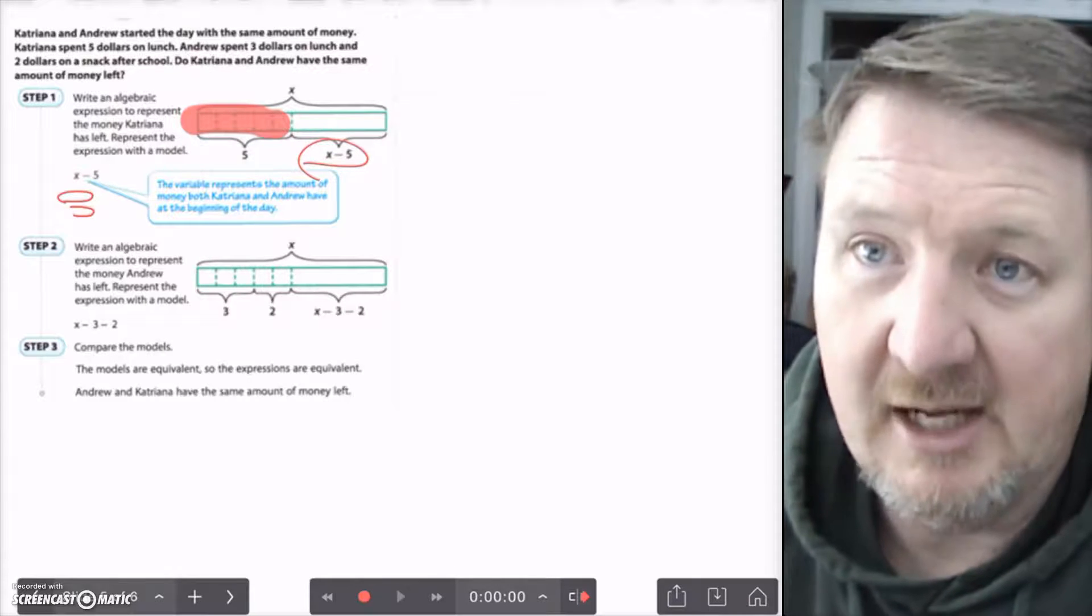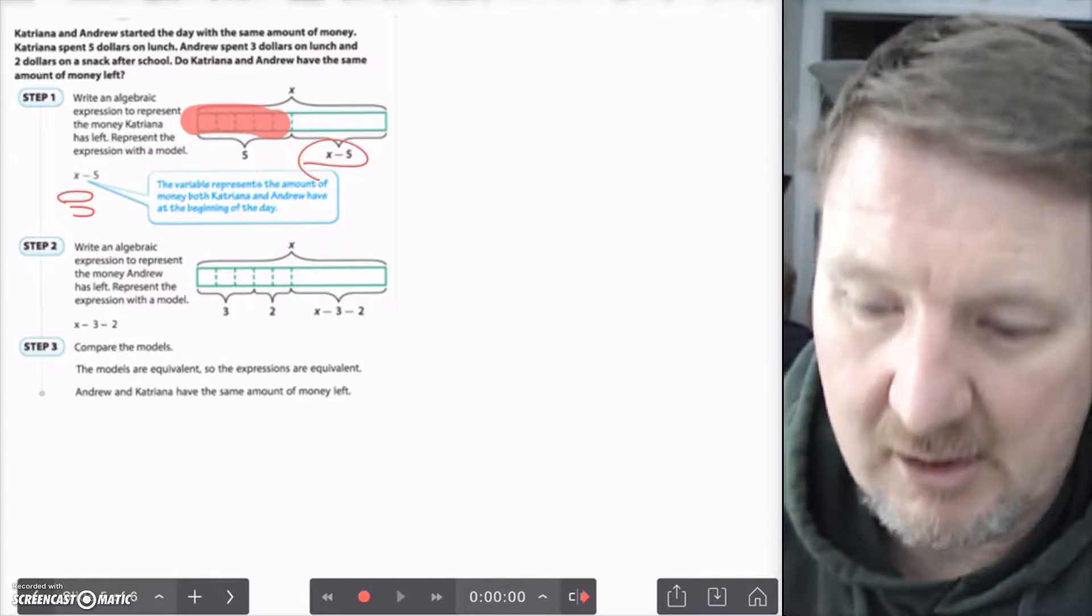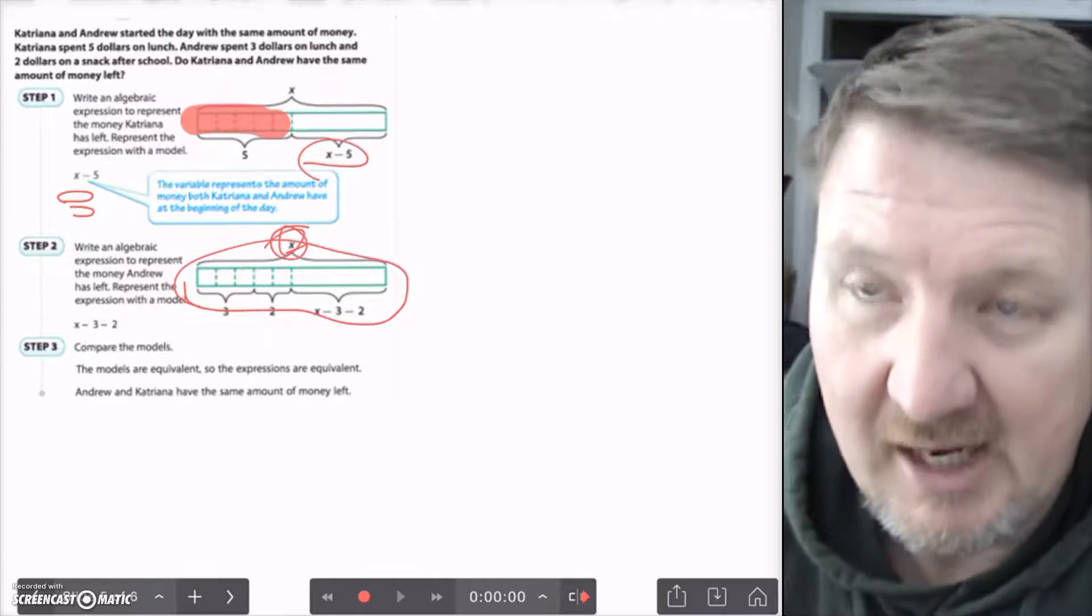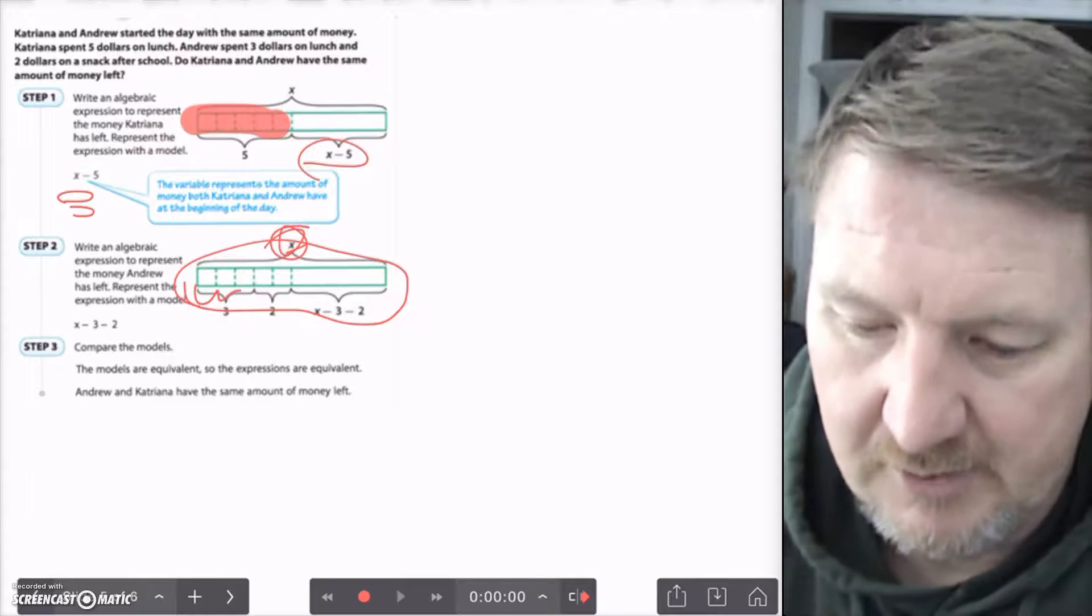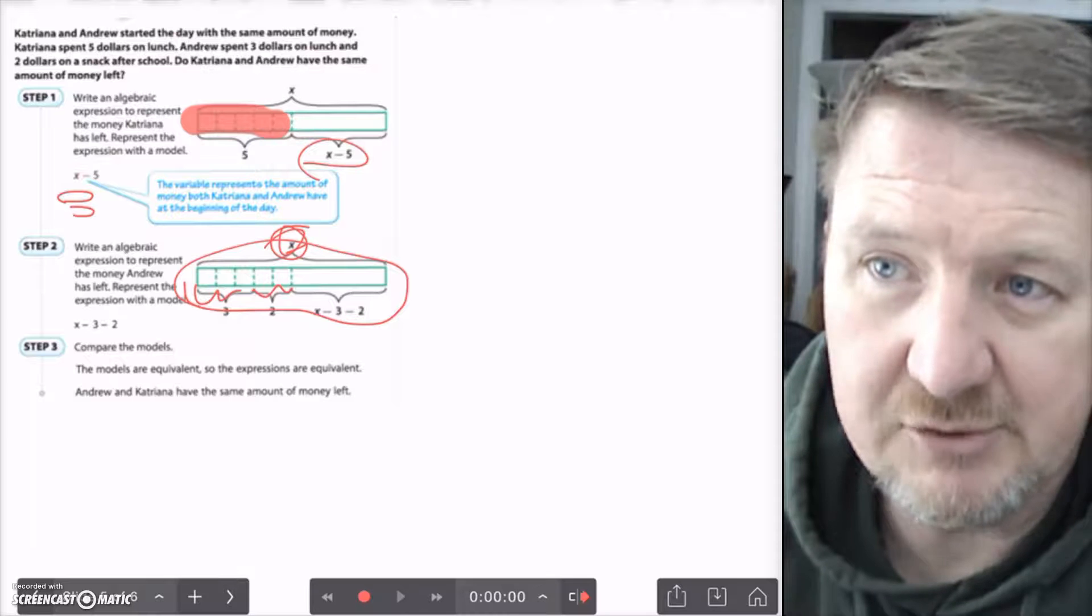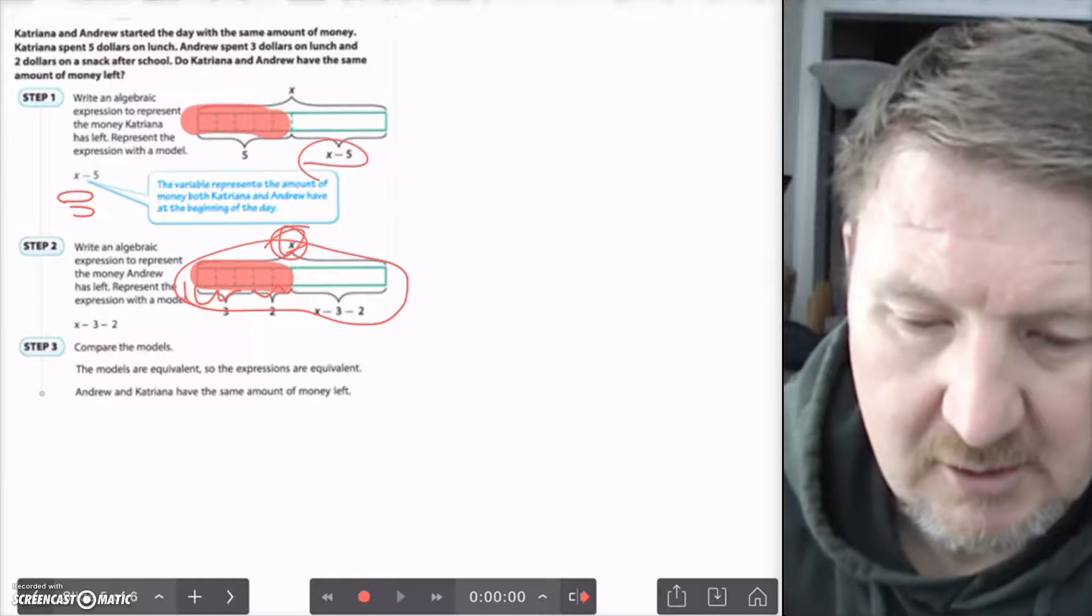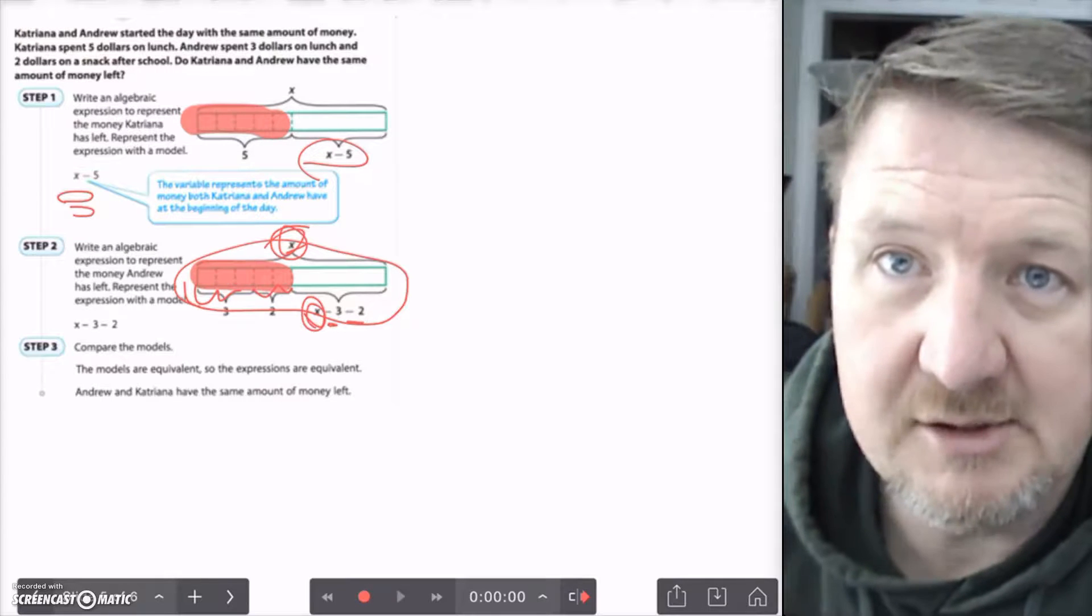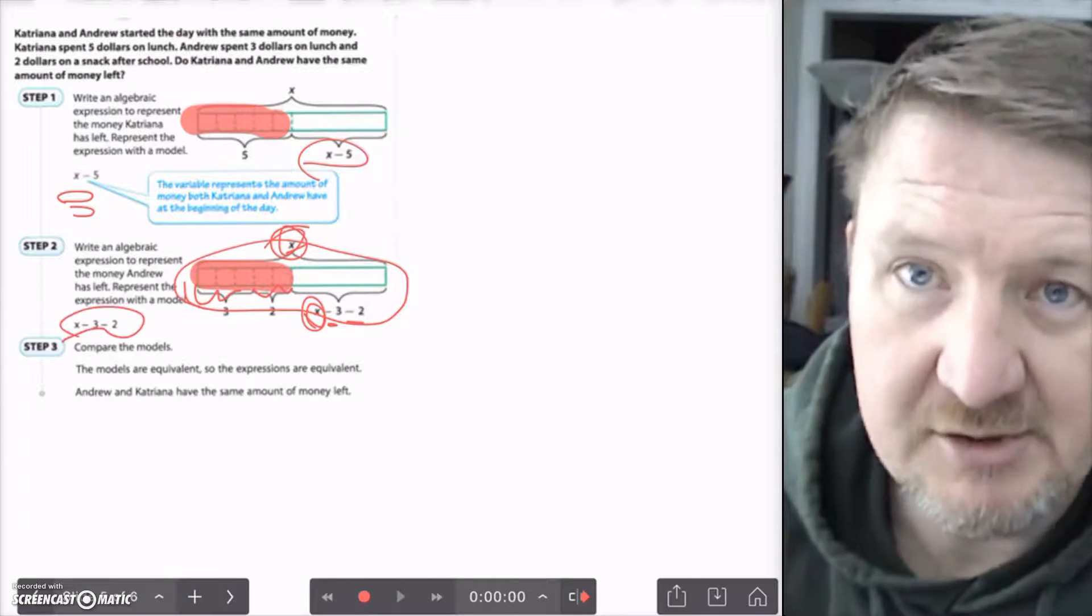So, then you write your expression, and it says the variable represents the amount both Katrina and Andrew have at the beginning of the day. And then step 2, write an algebraic expression to represent how much money Andrew has left. Represent the expression with a model. We've got the same thing. We've got some amount of money, and it's represented by x. Then, he spends $3 at lunch, and then he spends 2 more dollars for a snack after school. So, this much money is gone. What he has left is his original amount, minus the 3, minus the 2. And that's the expression we have: x minus 3, minus 2.